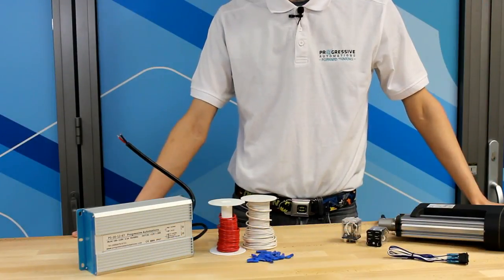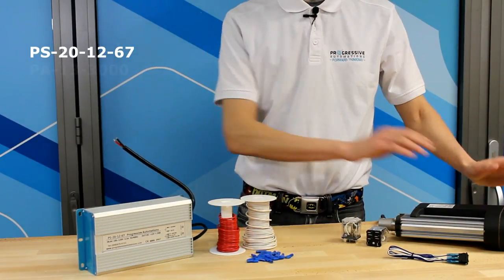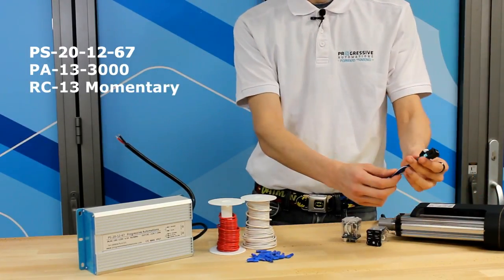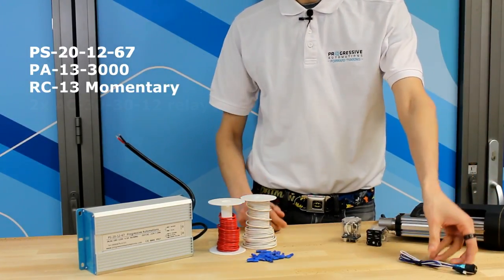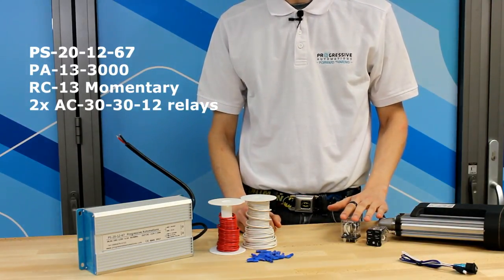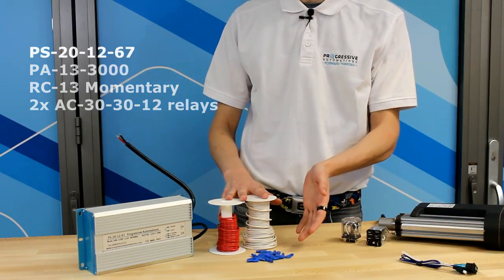For our 12 volt demonstration, I'll be using a PS20-1267 wall power supply, a PA13 3000 pound industrial linear actuator, an RC13 momentary rocker switch with wires, two AC30-3012 12 volt DC SPDT 30 amp relays, and some wires with quick disconnect connectors for easy wiring.